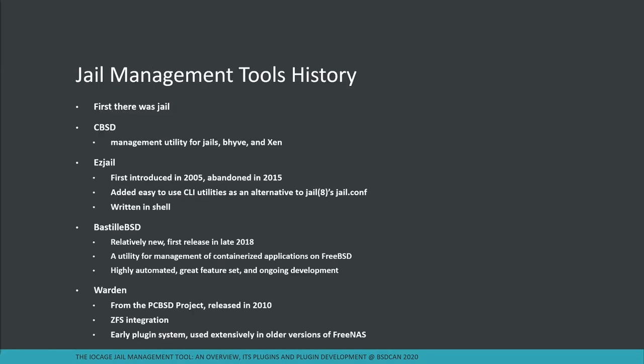Let's talk about some history. First there was jail. We've since got some other tools along the way. There's CBC, a management utility mainly for VMs with some jail support and a nice web UI. EasyJail was kind of the first popular jail management utility, first introduced in 2005 and abandoned as of 2015. It added a nice CLI utility as an alternative to jail.conf, and was written entirely in shell.